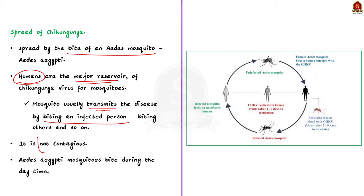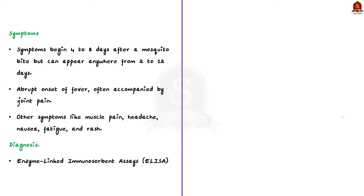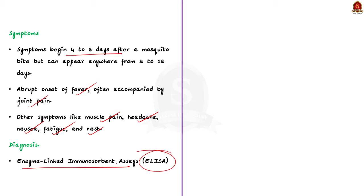Know that this disease is not contagious — an infected person cannot spread the infection directly to other persons, but it spreads only through the bite of mosquitoes. The transmission cycle of Chikungunya is displayed here. Coming to the symptoms: usually symptoms begin 4 to 8 days after a mosquito bite, and the most common symptom is onset of fever accompanied by joint pain. Other symptoms include muscle pain, headache, nausea, fatigue, and rashes. Various tests like enzyme-linked immunosorbent assays (ELISA test) can be used to confirm the presence of this disease. The world's first Chikungunya vaccine was only recently approved in the US, and currently there are no vaccines at mass level.